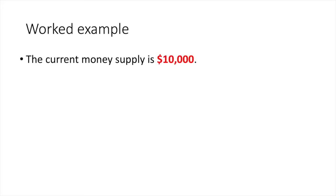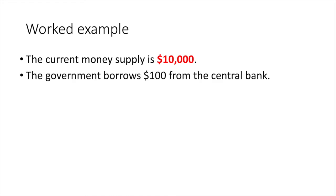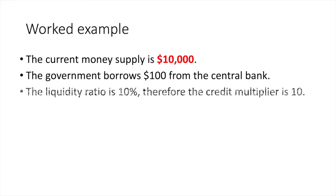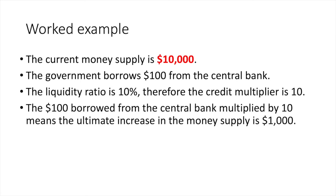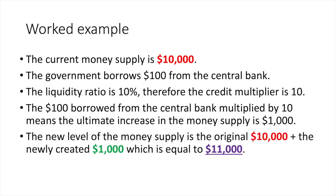Let's look at a simple worked example. Say the current money supply is $10,000. The government borrows $100 from the central bank. Assume the liquidity ratio is 10%, therefore the credit multiplier is equal to 10. The $100 borrowed from the central bank multiplied by 10 means the ultimate increase in the money supply is $1,000. The new level of the money supply is the original $10,000 plus the newly created $1,000, which brings the total to $11,000.